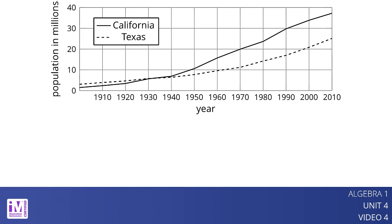Graphs are very useful for comparing two or more functions. Here are graphs of functions c and t, which give the populations, in millions, of California and Texas in year x.